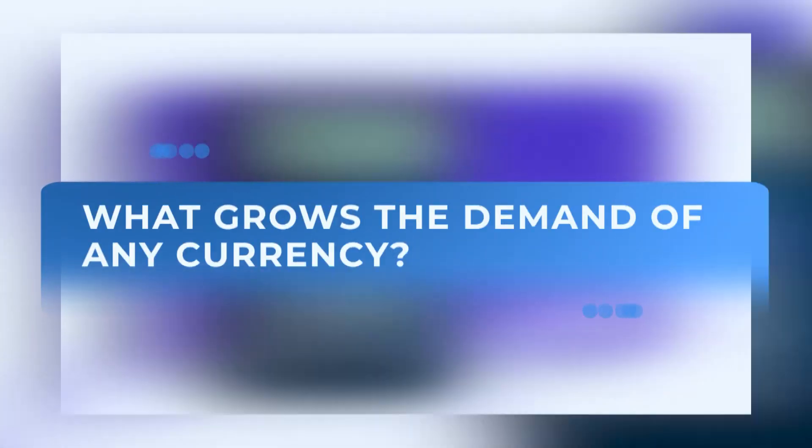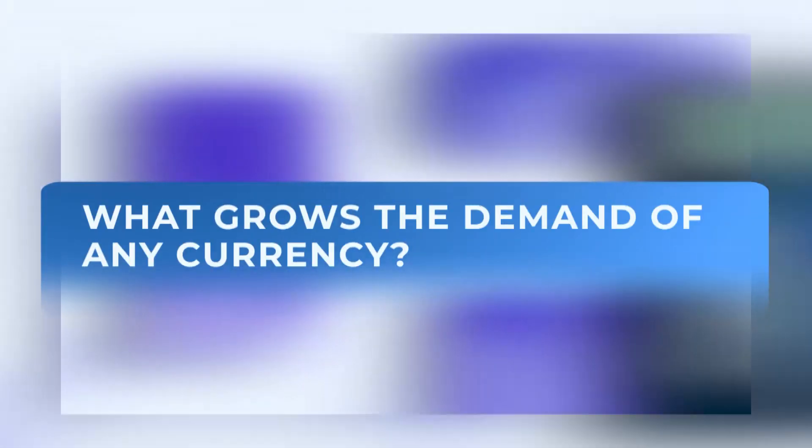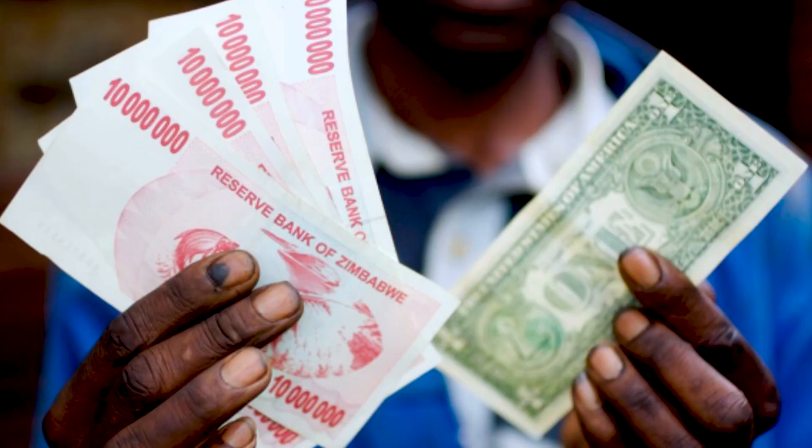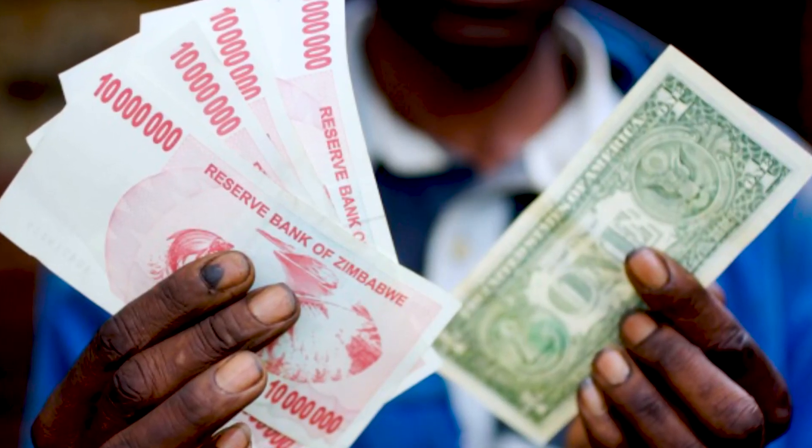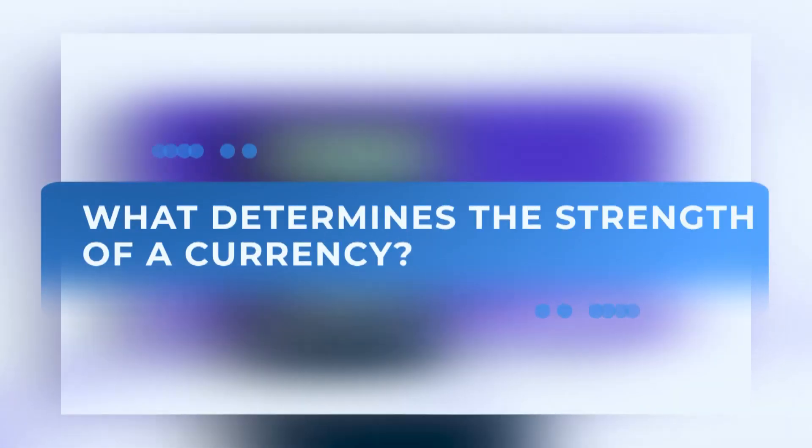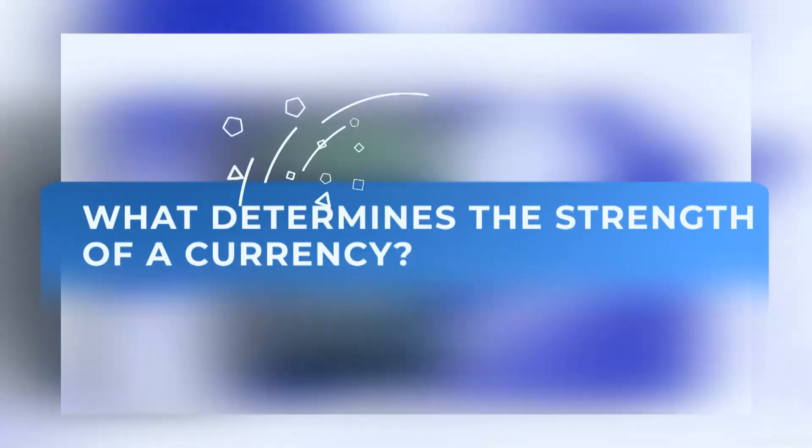The best example is: if there is political or economic instability, people are looking for a stable currency. For example, the US dollar is more stable compared with other currencies. Countries that have strong economies tend to have stronger currencies.